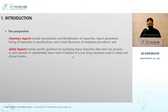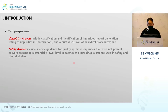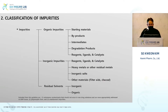There are two types of impurities in this guideline. The guideline explains impurities from a chemical aspect and a safety aspect. From the chemistry aspect, impurity classification, identification, report generation, listing, and analytical procedures are discussed. From the safety aspect, how the impurities can be measured and analyzed is discussed.